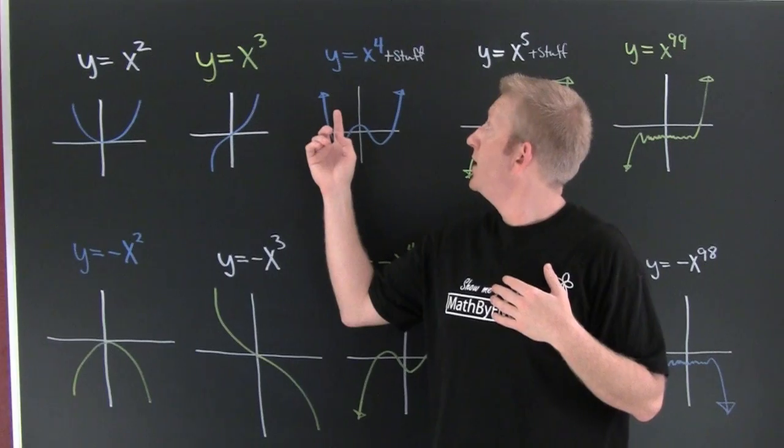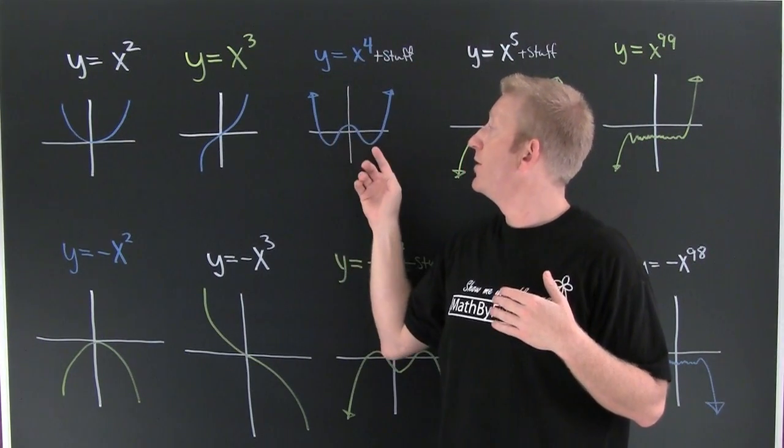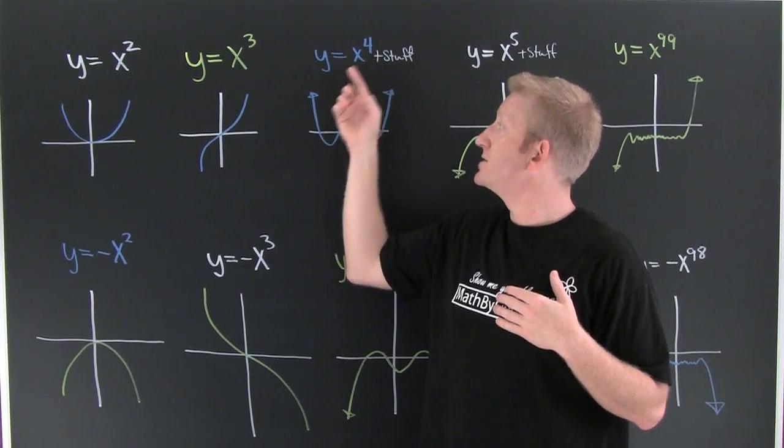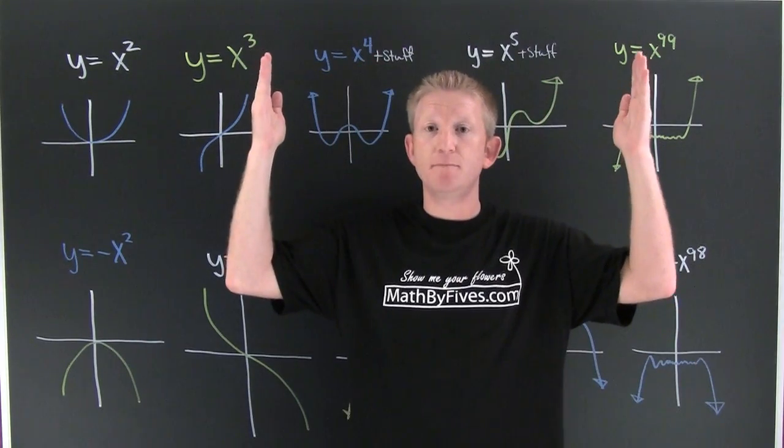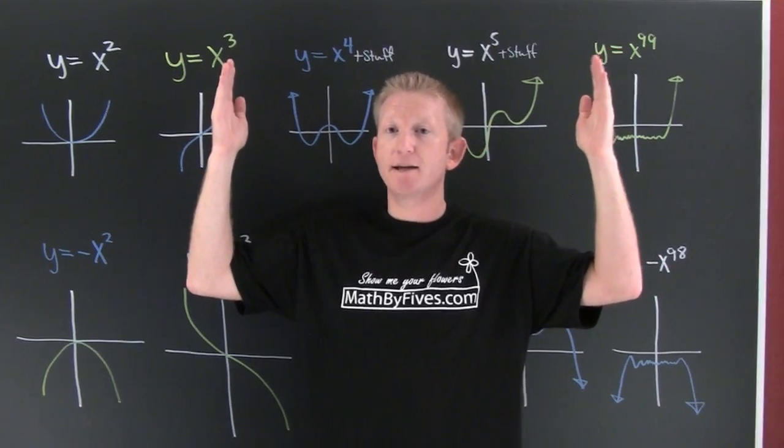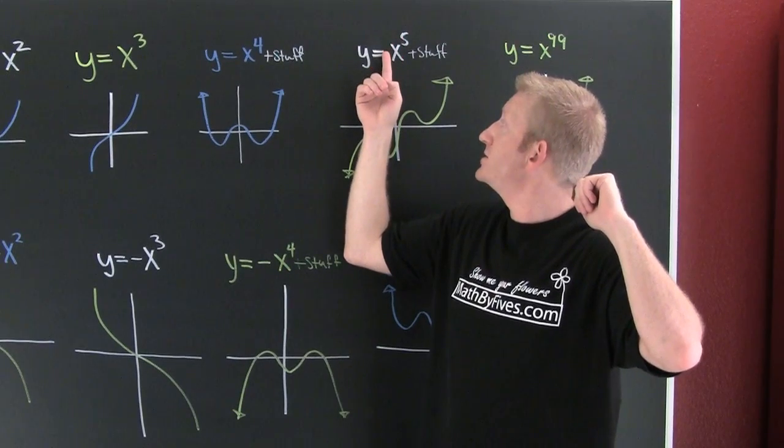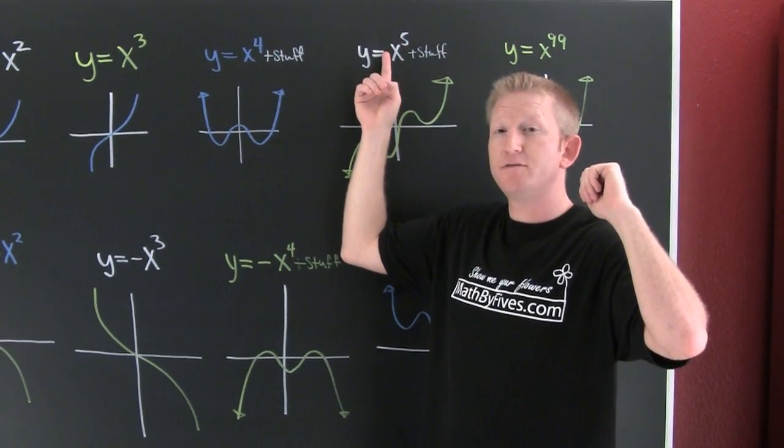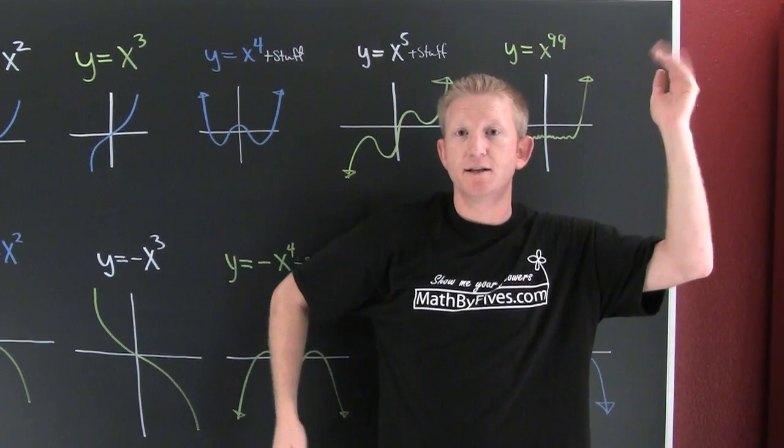Then we go to the next one, x to the fourth plus some stuff. It's going to have at most three wiggles, one power less. But we're talking about end behavior. Because it's even, they end the same and they end up. Next, cube. It's odd so they're mixed. The power in front is positive so at large values of x it's going to end up and mixed like this.